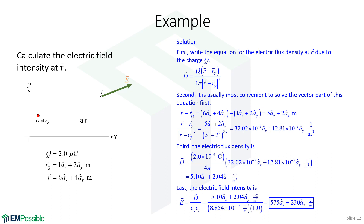Now we can plot it. We see a rather large electric field — almost kilovolts per meter — pointed in a direction directly away from charge Q. And that makes sense: we know the electric field only has that radial component, pointing directly away from the source charge.